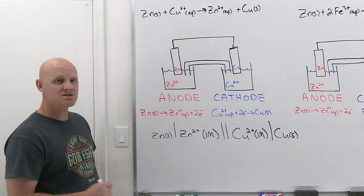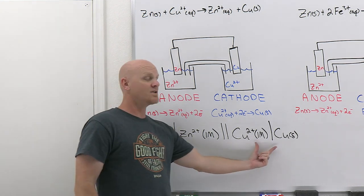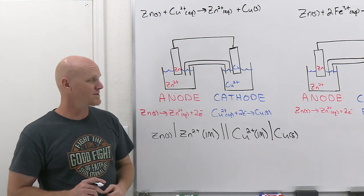When you come across this, you're supposed to look at this and realize, oh, there's the anode. That's oxidation. And on the right, there's the cathode. That's reduction. That's what you're supposed to kind of get from that.